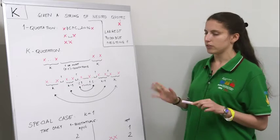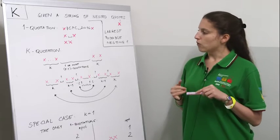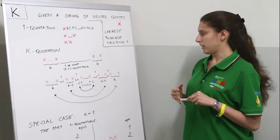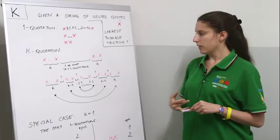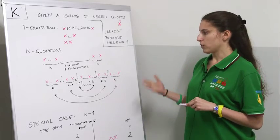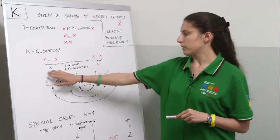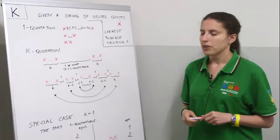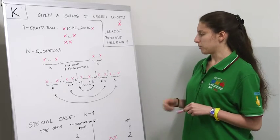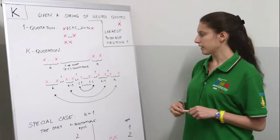The solution for this task looks as follows. First, if we have an odd number of quotes, then obviously we have no solution because quotes are always paired. So only for an even number of quotes we may have some nesting.